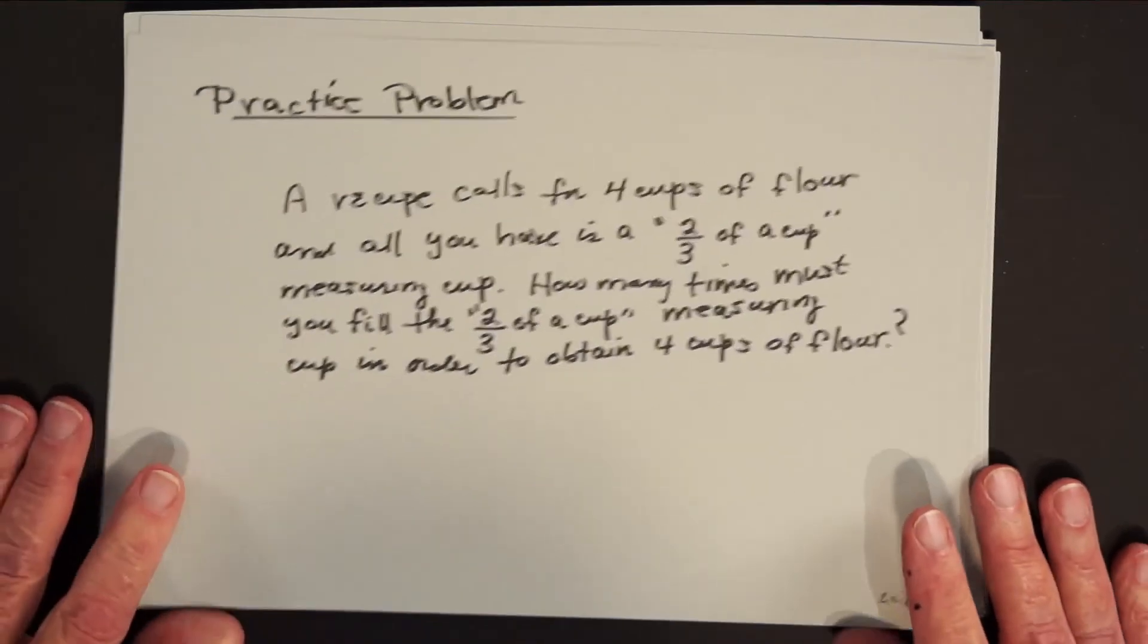You see, what we're going to do in subsequent lessons is to talk about the arithmetic of mixed numbers. How do you add mixed numbers? How do you subtract them? How do you multiply them? How do you divide them? But for today's lesson, I just wanted to make sure that the concept of a mixed number and its relationship to an improper fraction was fixed firmly in your mind. So let's close today with our usual practice problem.